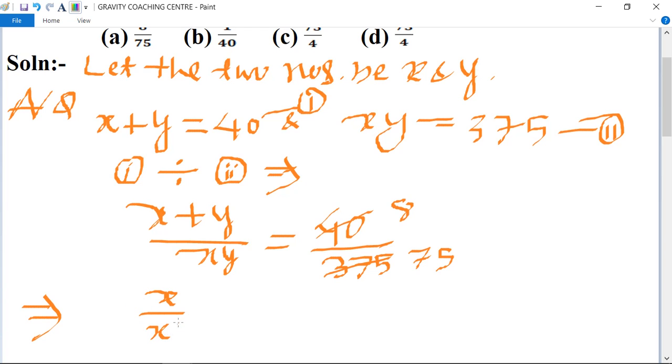Both numerator and denominator cancel by 5, so 40 becomes 8 and 375 becomes 75. Separate the terms: x upon xy plus y upon xy equal to 8 upon 75. The x's cancel and the y's cancel.